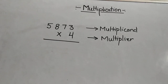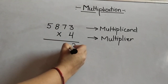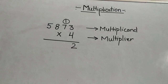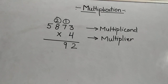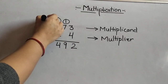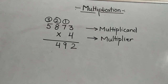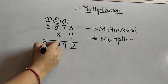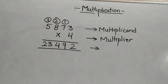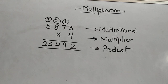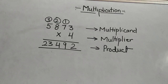Let us see the simple example. 4 times 3 is 12, 1 carry. 4 times 7 is 28 plus 1 is 29, 9 here and 2 carry. 4 times 8 is 32 plus 2 is 34, 4 here and 3 carry. 4 times 5 is 20 plus 3 is 23. So this answer is called the product of these two numbers. The multiplicand is 5873, multiplier is 4, and the product is 23,492.